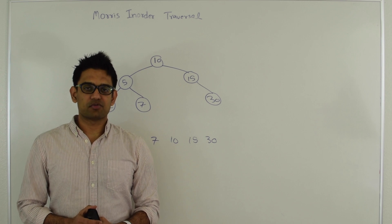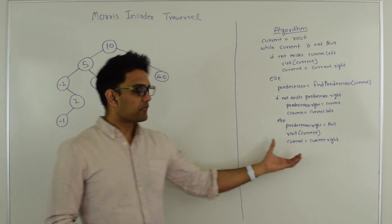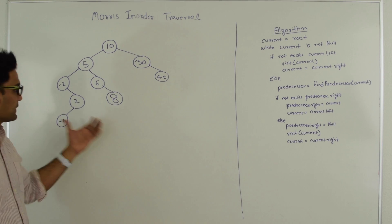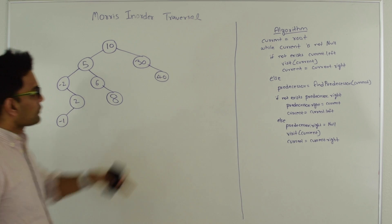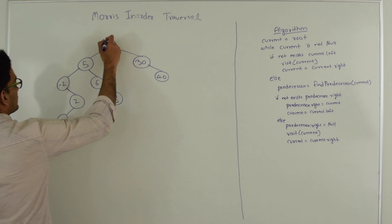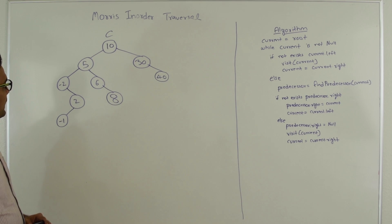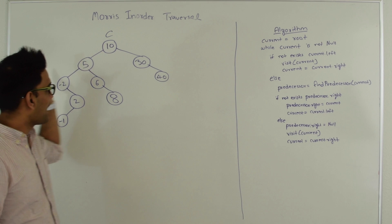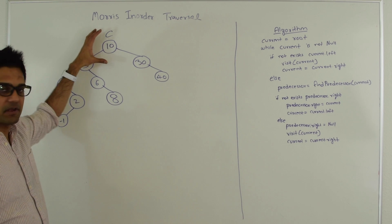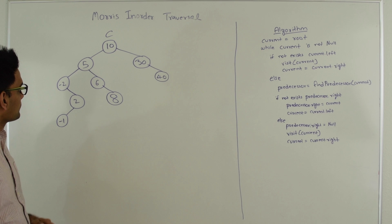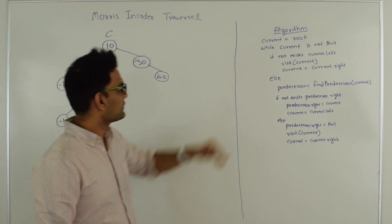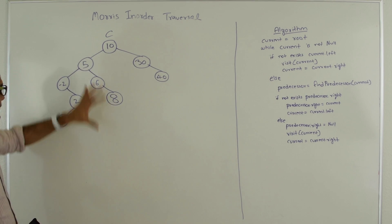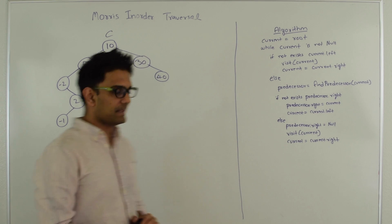Next let's try to understand how Morris traversal works. The algorithm is pretty small and we're going to apply it on this example. Our current starts at root, so initially current is 10. If 10 did not have a left child we would just visit 10 and move to the right side. But since 10 does have a left child, we go into the else condition.